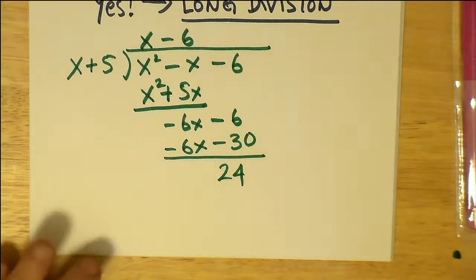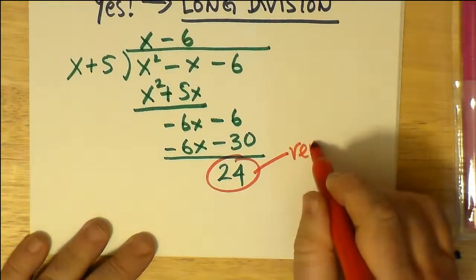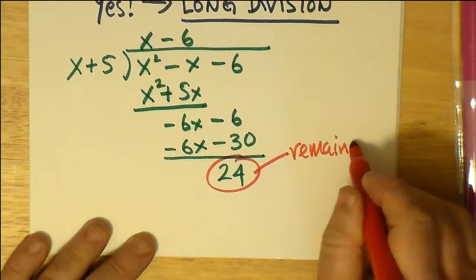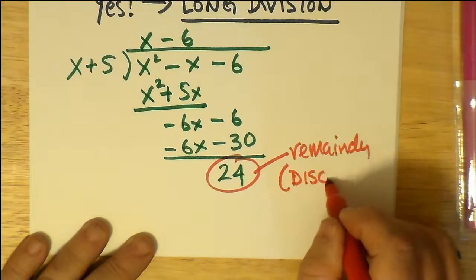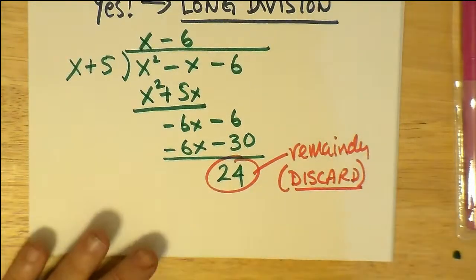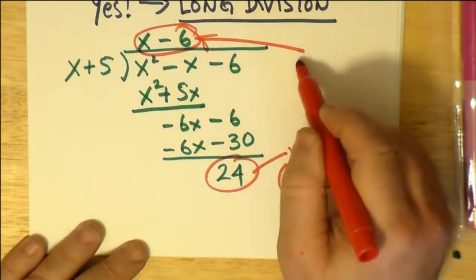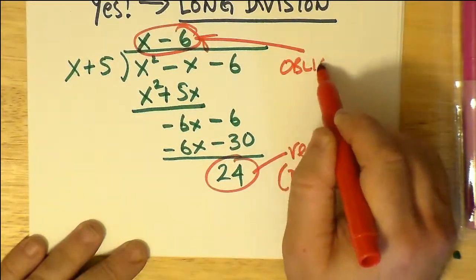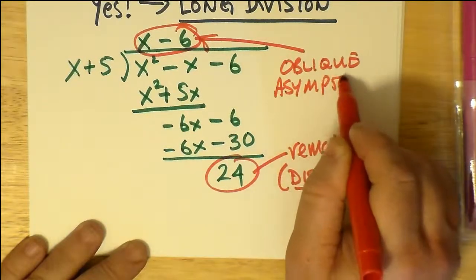Now, it's interesting. What do we do with the x minus 6, and what do we do with the remainder? Well, I will tell you here that all you need to do with the remainder is throw it away. Just discard it. It's not needed. And you go up to the x minus 6, and that is going to be the equation for the oblique asymptote, which I will prove in a moment.